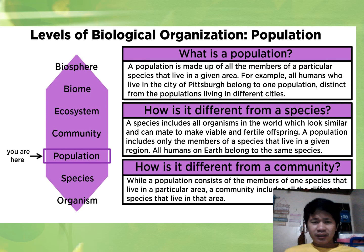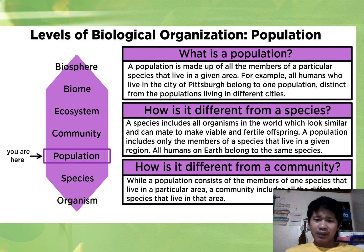This slide talks about the levels of organization. There are many levels: organism, species, population, community, ecosystem. Basically, this explains the difference between population and community, and between population and species.